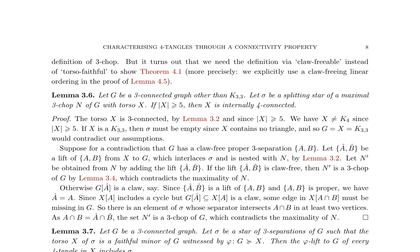This section defines a 3-chop, which is pivotal for subsequent analysis. A key lemma states that if a graph G is 3-connected and not equal to K3,3, and has a splitting star sigma of a maximal 3-chop N with a torso X, then X is internally 4-connected when |X| is greater than or equal to 5. The paper then explores the relationship between a faithful minor of a graph and its four-tangles. Specifically, it is shown that if G is 3-connected and there exists a star of three-separations sigma such that the torso X of sigma is a faithful minor of G witnessed by phi, then the phi-lift to G of every four-tangle in X includes sigma.